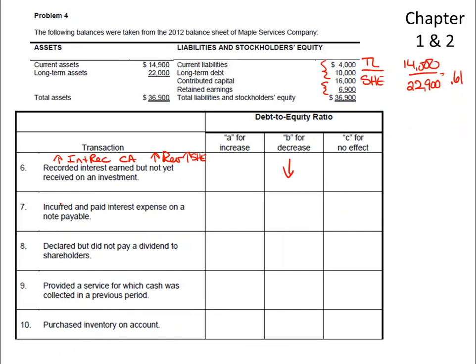If we incurred and paid interest expense on a note payable, that increases interest expense, which in turn decreases shareholders' equity, and we also decrease cash, which is a current asset that has no impact on debt-to-equity. So if shareholders' equity is going down, the debt-to-equity ratio will increase.